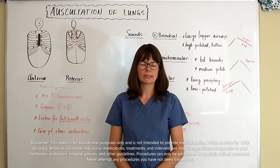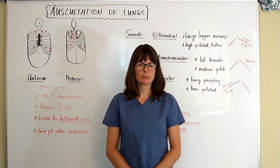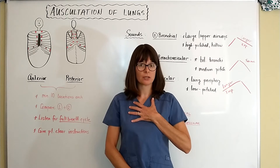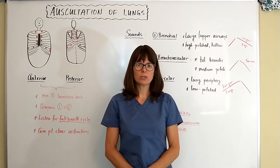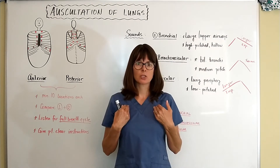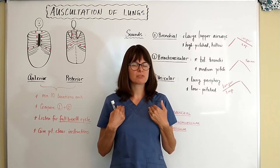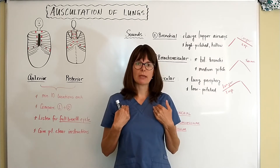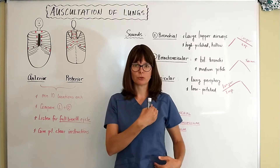Welcome to Nursing School Explained. This video in the assessment series is about auscultating the patient's lungs. Whenever we assess the patient's lungs, we have to make sure that we assess the front anteriorly as well as their back posteriorly, and we always want to compare the right and left sides. We want to approach this in a very methodical way, making our way from the top to the bottom and comparing right to left at the same time.